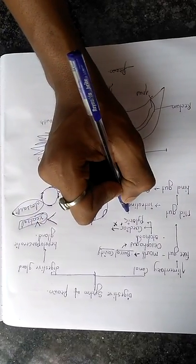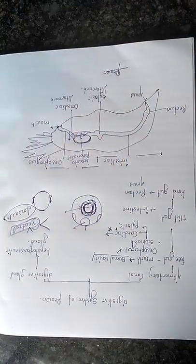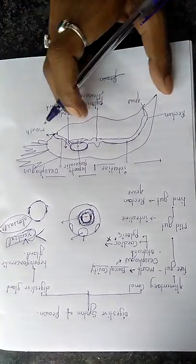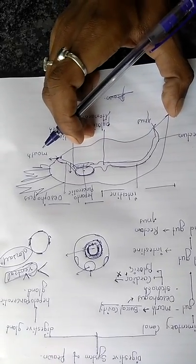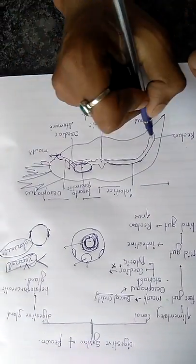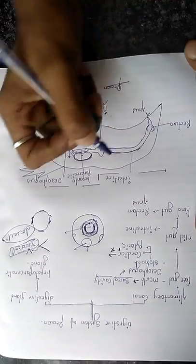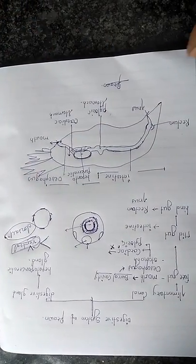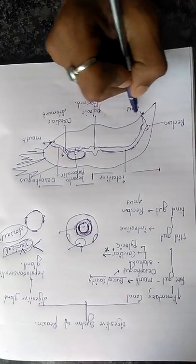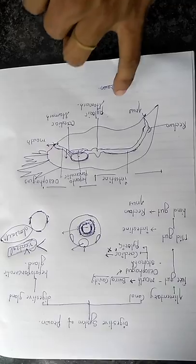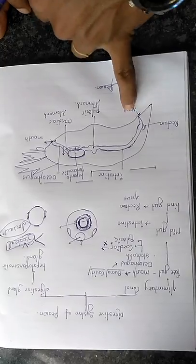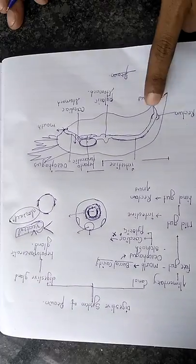The pyloric stomach leads to the intestine. The intestine is a straight muscular tube present in the abdomen segment. The intestine leads to the rectum, which is a swollen-like part present at the back side near the anus, and the rectum leads to the anus.